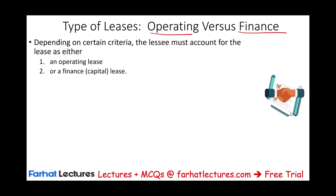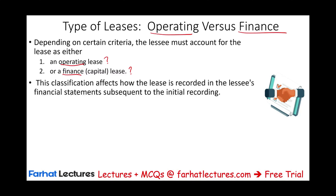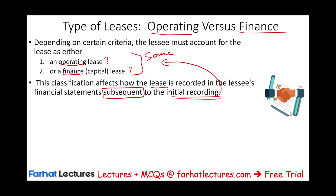In this session we need to explain when a lease is an operating lease, when it is a finance lease, what each type is. This classification will influence how the lease is recorded in the lessee's financial statements subsequent to the initial recording. Both operating and finance leases are treated the same in the initial recording — how they differ is subsequent to that. All we do in this session is determine whether a lease is operating or finance.